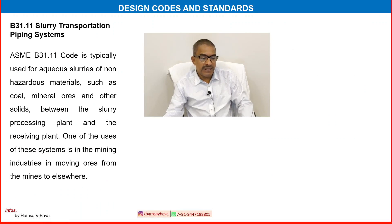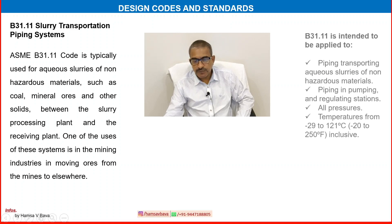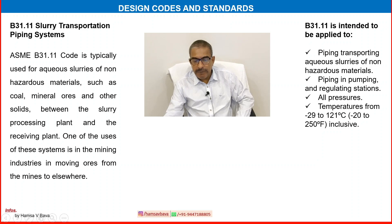One more ASME code is B31.11, Slurry Transportation Piping System. This code is typically used for aqueous slurries of non-hazardous materials such as coal, minerals, ores and other solids transported between the slurry processing plant and the receiving plant. One of the uses of these systems is in the mining industry for moving ores from mines to elsewhere. This code applies to piping transporting aqueous slurries of non-hazardous material, piping in pumping and regulating stations, at all pressures, and temperatures from minus 29 to 121°C.